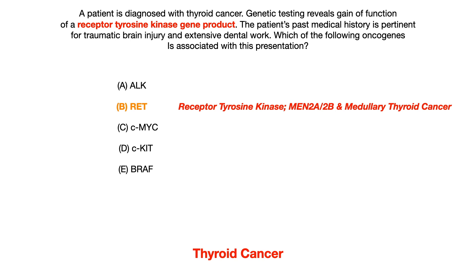The correct answer is choice B, RET, which is associated with medullary thyroid cancer. But let's say you didn't know that RET was associated with thyroid cancer, or even that it's a receptor tyrosine kinase — could you eliminate incorrect answer choices based on information you know about the other options?